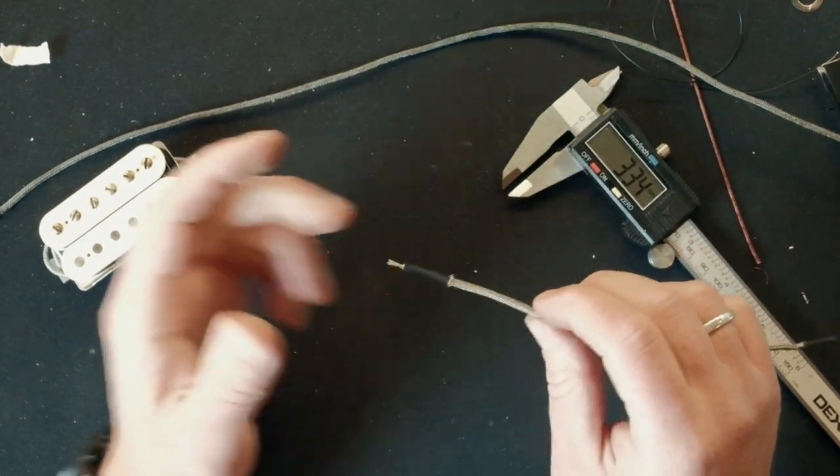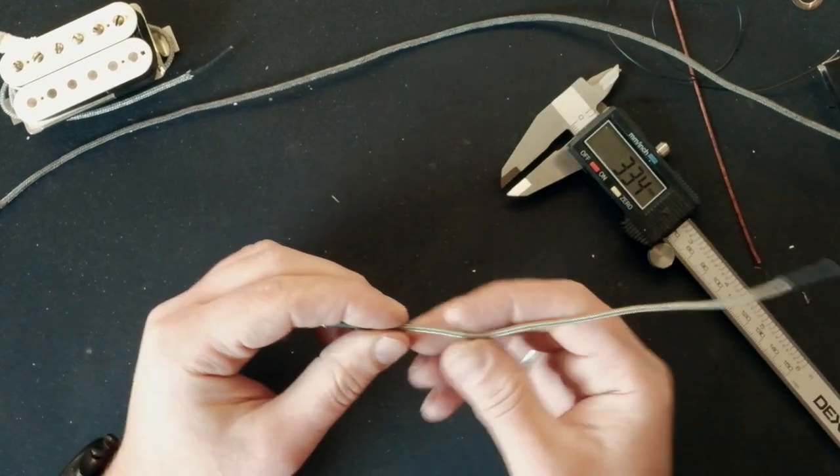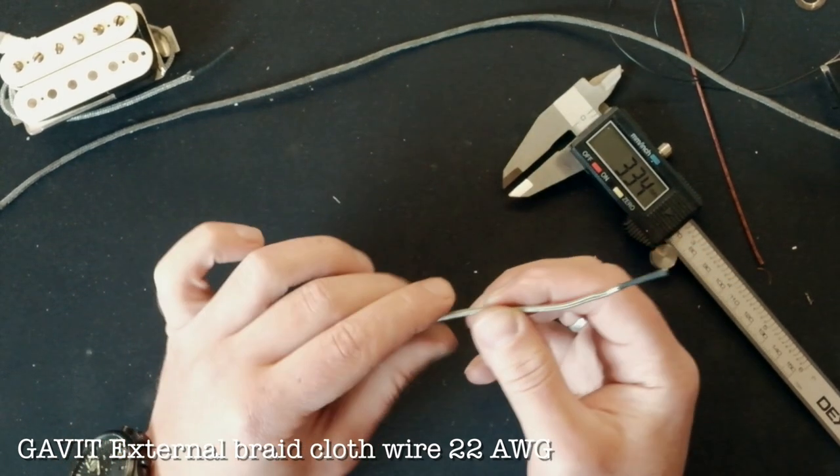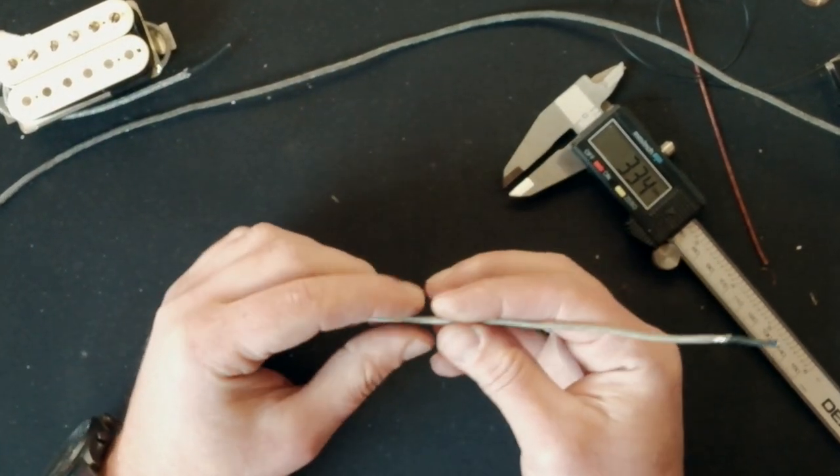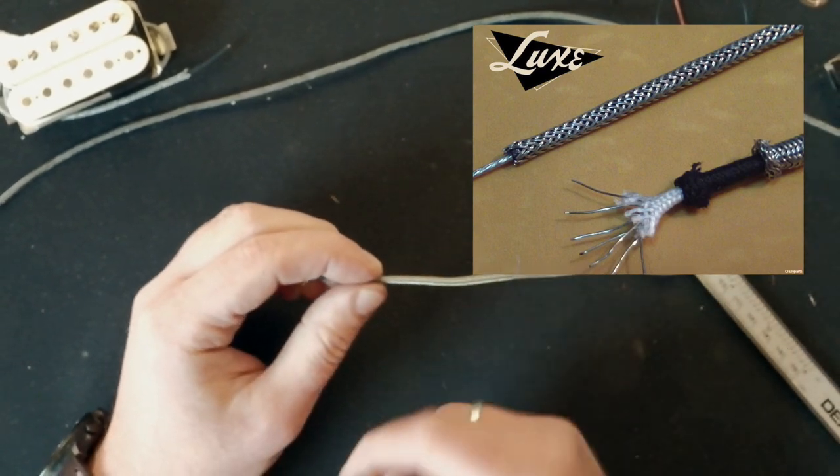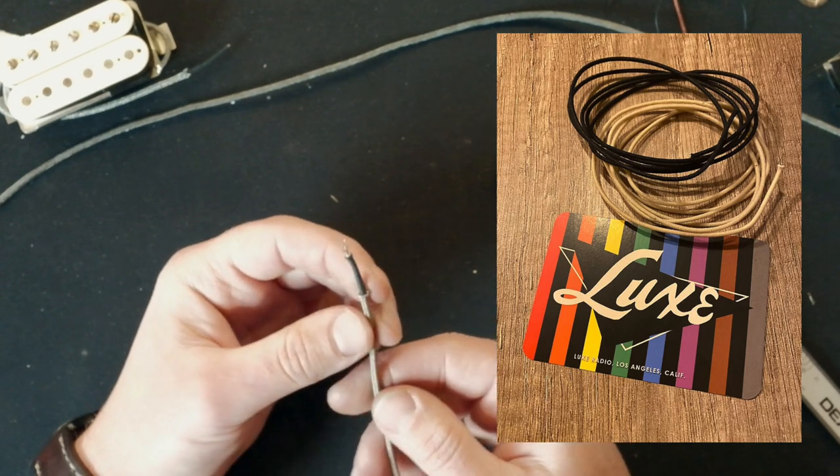My favorite wire for soldering the Les Paul and the pick-up is the Gavit wire. Good replicas are produced and sold by the Lux company. They are very worthy replicas of vintage wires. Basically, Gavit sells something of this sort.